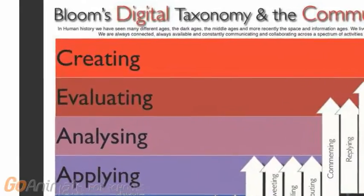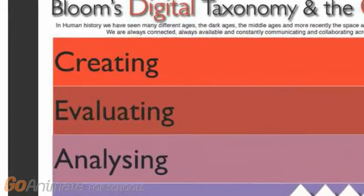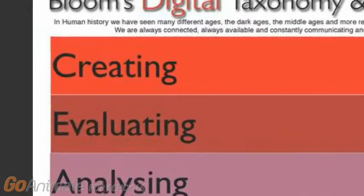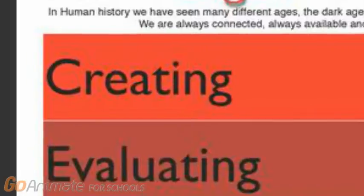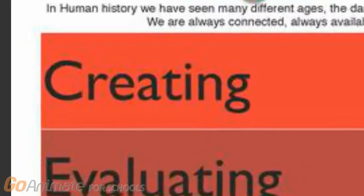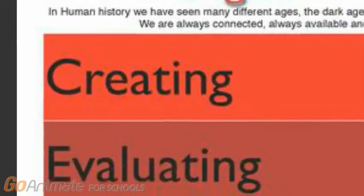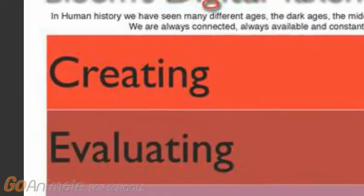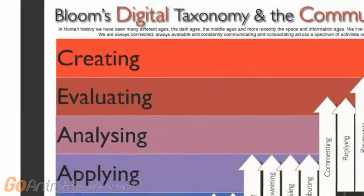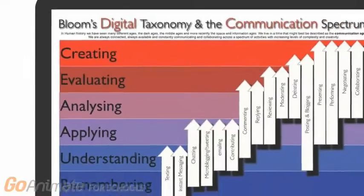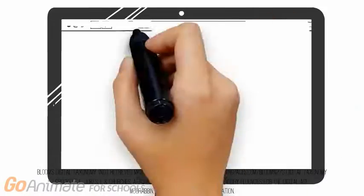Crockett, Dukes, and Churches suggest that if our goal is to cover all of the spectrum, then we should focus on creating to ensure that our students hit all of the sections. From what I can see, the difference between the new and old Bloom's taxonomy are minimal. The new suggests that you may start anywhere, whereas the old suggests that you start from the bottom.